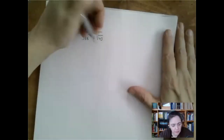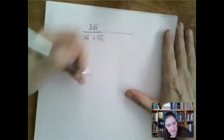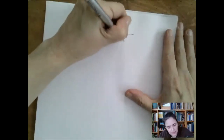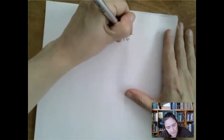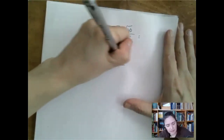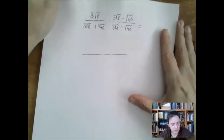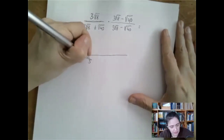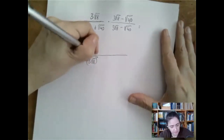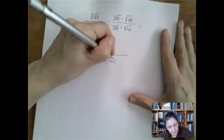So we multiply upstairs and downstairs by root 8 minus root 40. The denominator, because we are multiplying conjugates, is going to be the square of the first one minus the square of the second one.